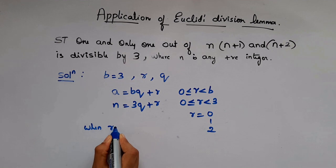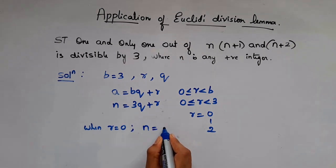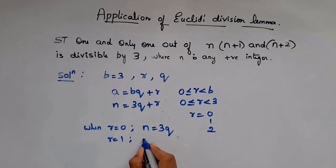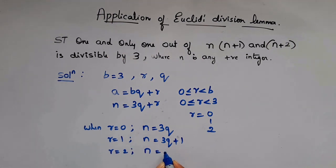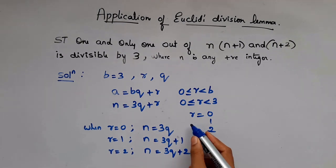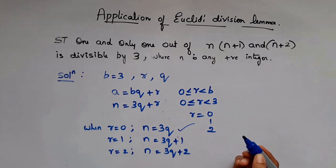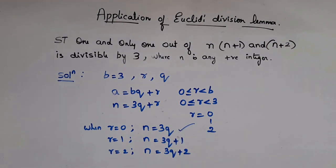When r is 0, your n will be 3q. When r is 1, your n will be 3q + 1. When r is 2, your n will be 3q + 2. From this, it is clear that only 3q is divisible by 3. That is, only one number out of the three consecutive numbers is divisible by 3. That's the point.